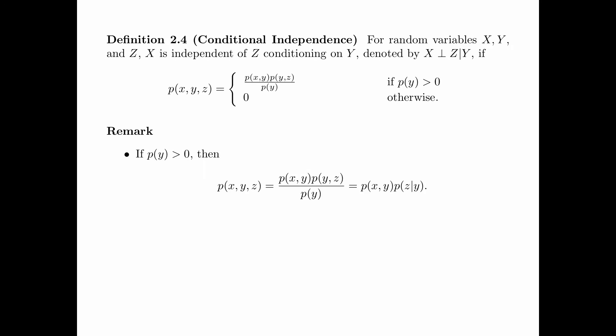Here are some remarks. First, if P(Y) is greater than 0, then P(X,Y,Z) equals P(X,Y) times P(Y,Z) divided by P(Y). Here, P(Y,Z) divided by P(Y) equals P(Z given Y). Therefore, we have P(X,Y,Z) equals P(X,Y) times P(Z given Y). So we can also use this form in the definition for conditional independence.